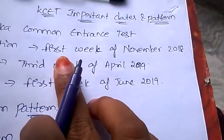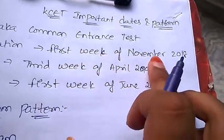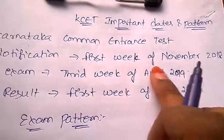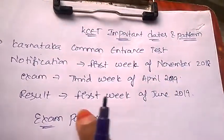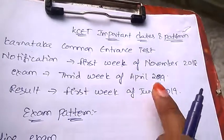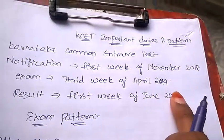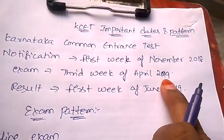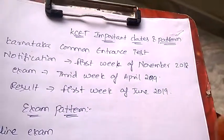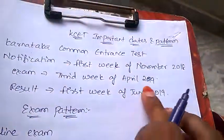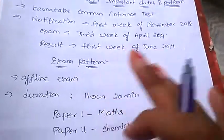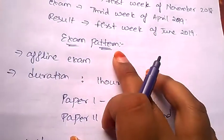The notification will be approximately in the first week of November 2018, the exam will be in the third week of April 2019, and the result will be issued in the first week of June 2019. The dates have not yet been officially released, so I'm giving you the approximate weeks and times for the examination and results.